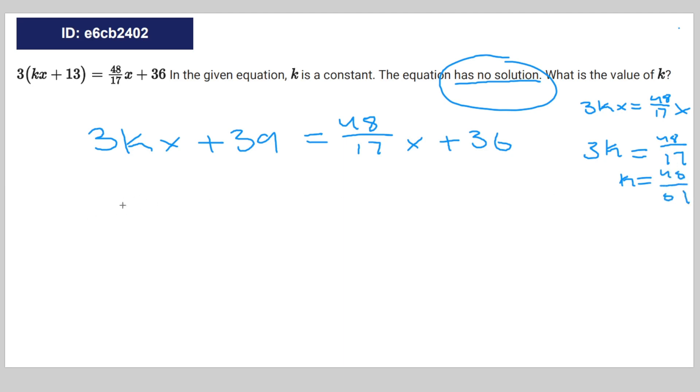You can plug that in and that'll give you 48 over 17x plus 39 is equal to 48 divided by 17x plus 36. Subtract 48 over 17x from both sides, you get 39 is equal to 36.